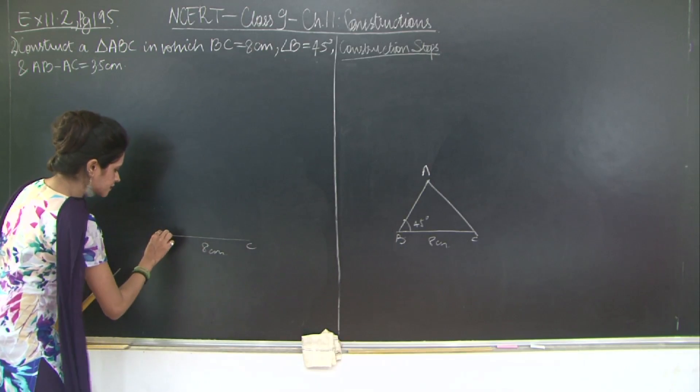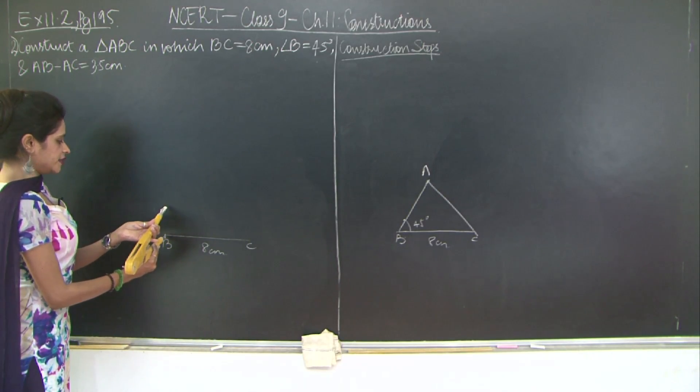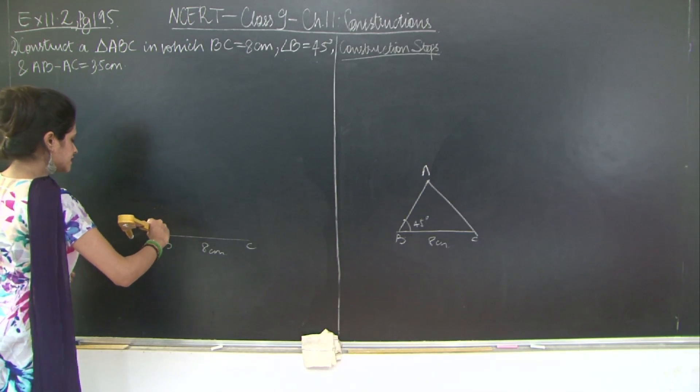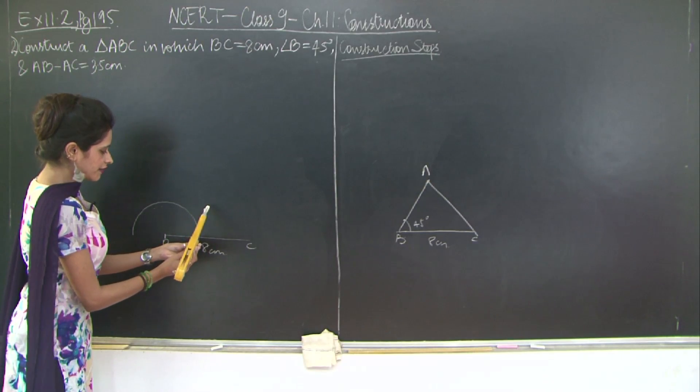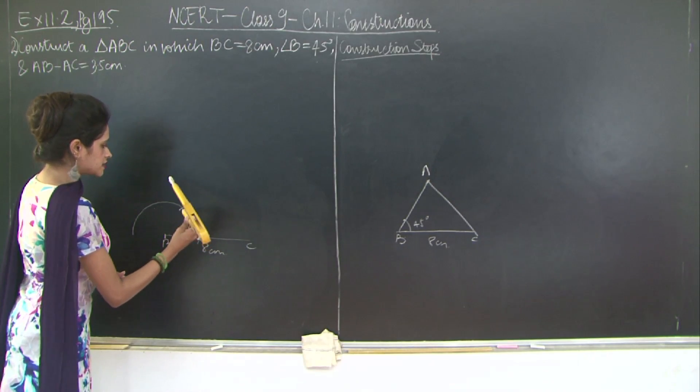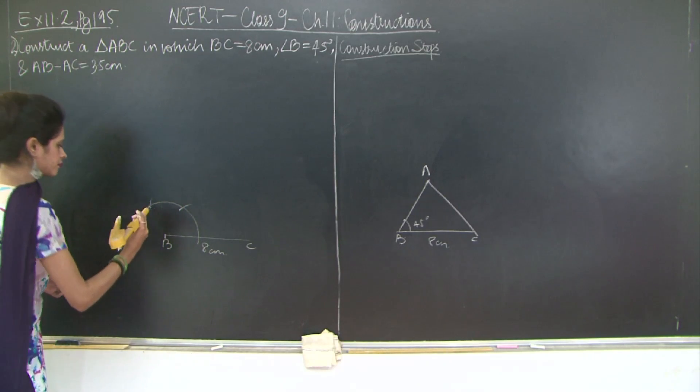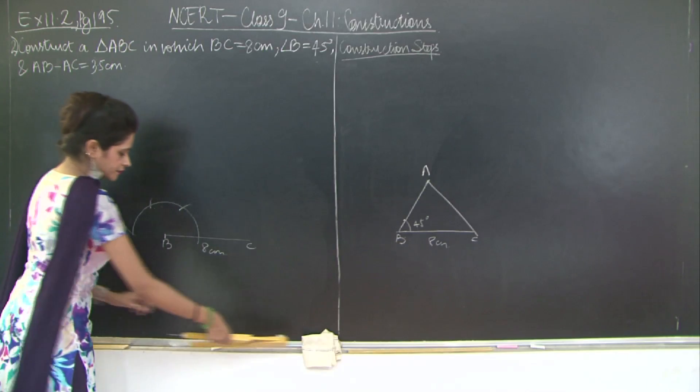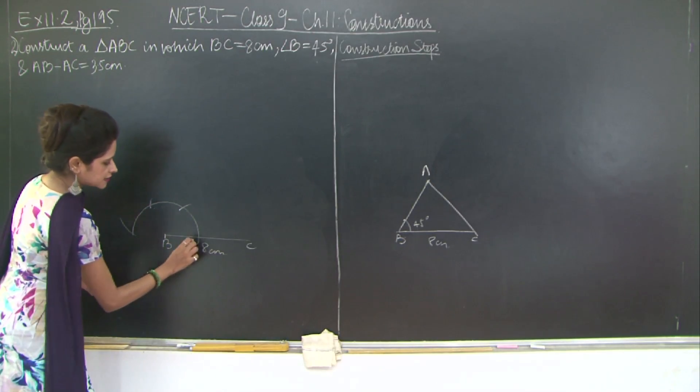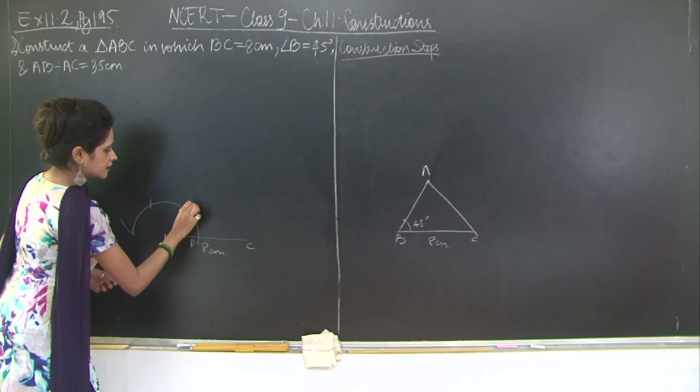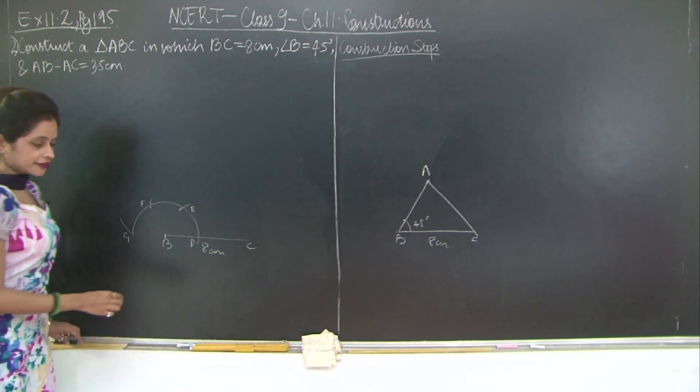So I will take 90 degrees first and bisect it. Here I have B. How do you draw 90 degrees? You cut an arc with B as your center, then without changing the length you divide this arc into three equal parts. Let's mark these arcs as D, E, F, and G. Now I'm going to join B to E and F.